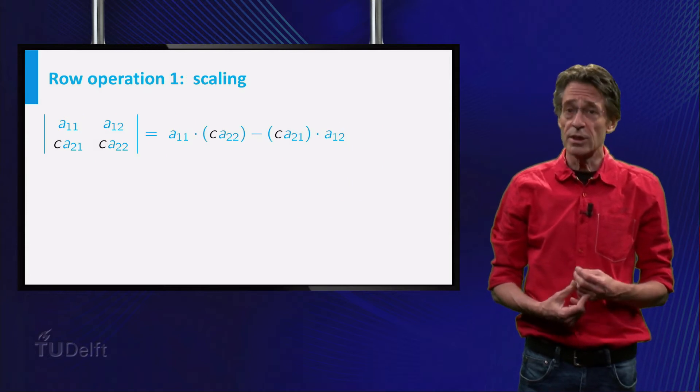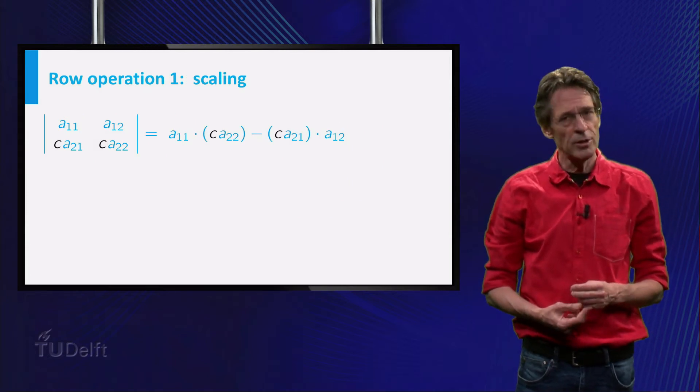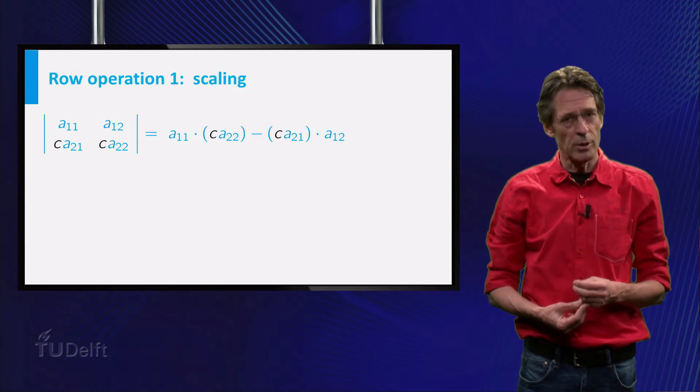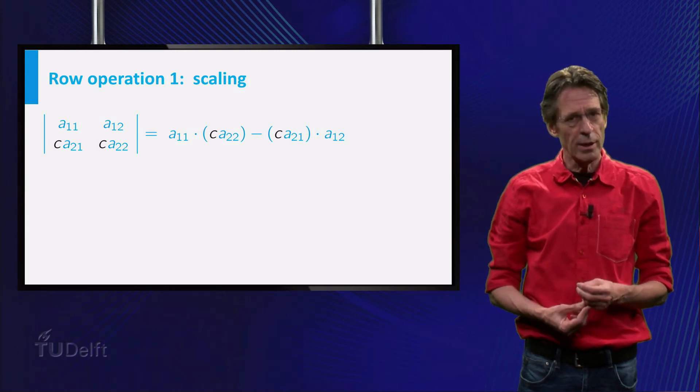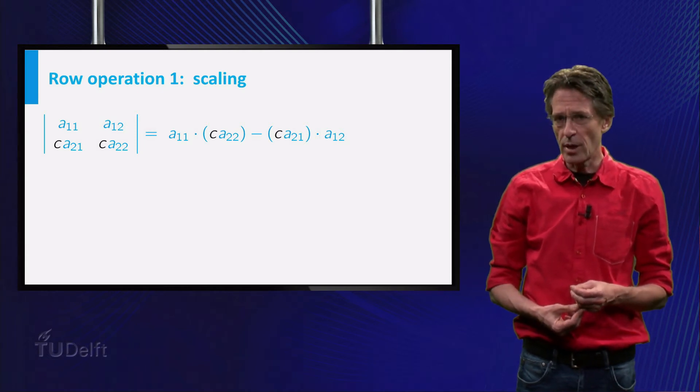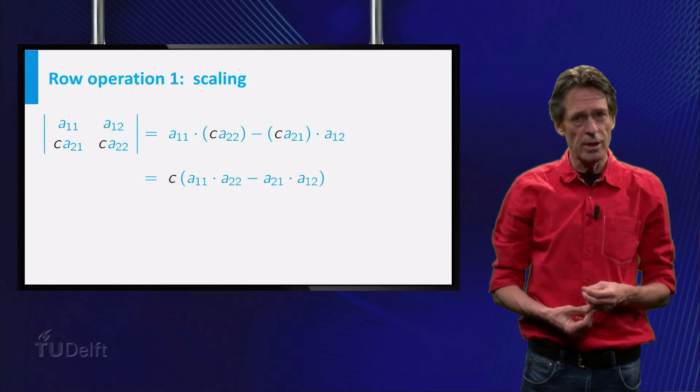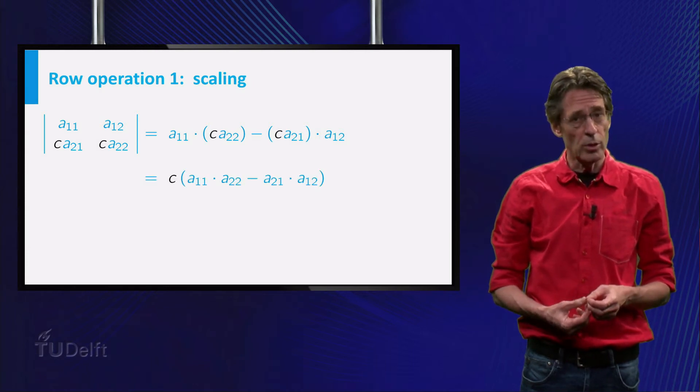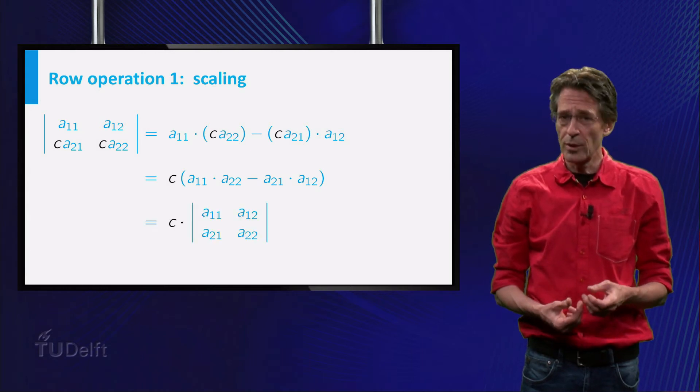The easiest row operation is scaling. That is, multiplying a row by a number c. It is quickly seen that this scales the determinant with a factor c as well. On the slide this is written out for a 2x2 matrix. There you see that if you scale one row with a constant c, the determinant also changes with a factor c.